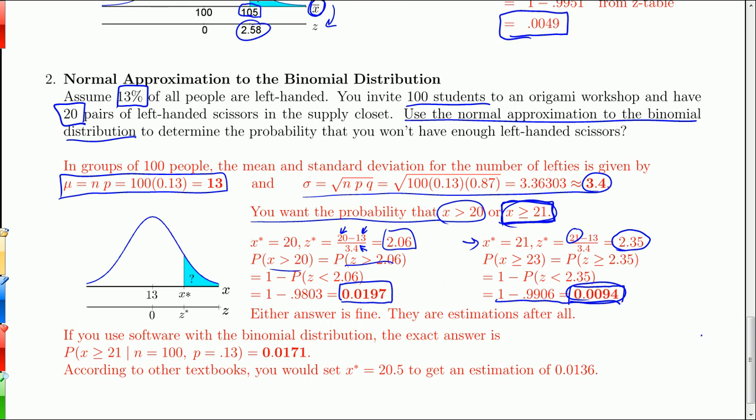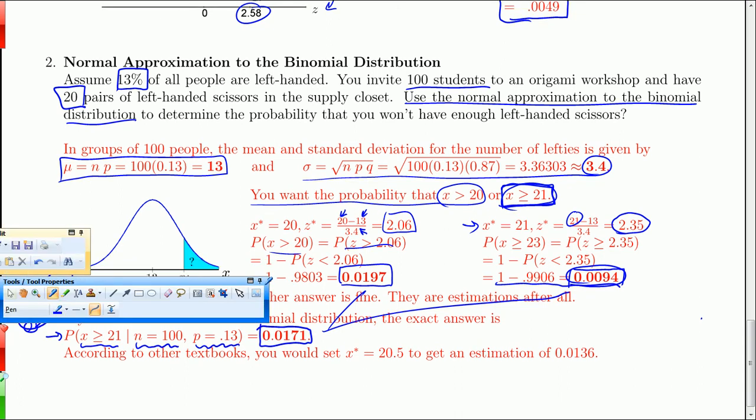Other books would say what you should do is find the probability that x is greater than 20.5, so you sort of split the difference there. But if you actually have software that can do the binomial distribution for large n, you can find the probability that x is greater than or equal to 21 in n trials where the probability of a single success is 0.13, we get 0.0171. So I notice it's actually in between my two estimates, so the normal approximation did a pretty good job of narrowing in on the actual probability. This by the way is actually the exact answer.